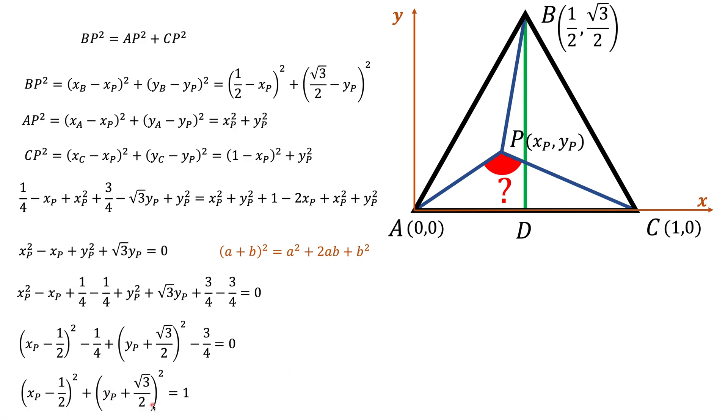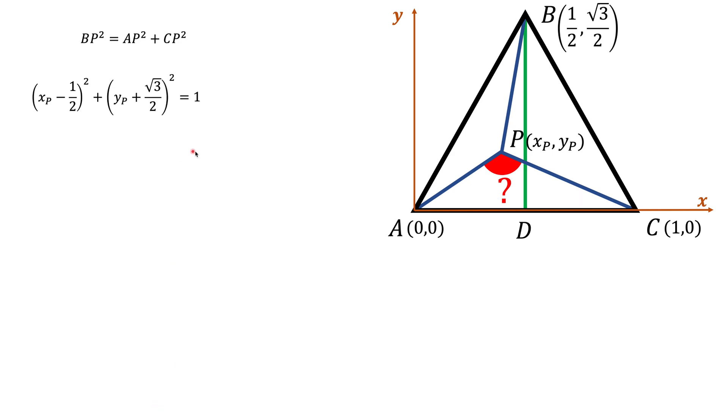Now what we've got here is actually the equation of a circle. In general, equation of a circle looks like this, where a, b, and r squared are constants. In this equation, a and b represent the coordinate of the center of a circle, and r represents the radius of a circle. In our case, the center will be (1/2, -√3/2) and radius will be 1.